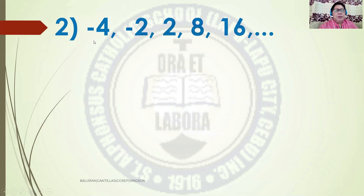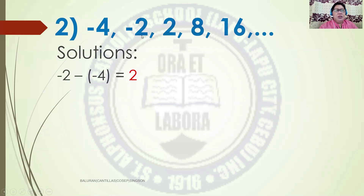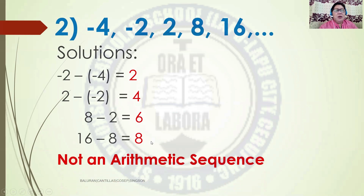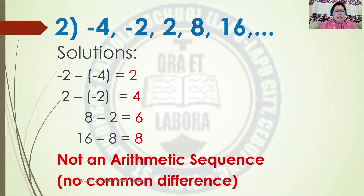Next, number 2. The terms of the sequence are negative 4, negative 2, 2, 8, and 16. Taking the difference: negative 2 minus negative 4 is 2; 2 minus negative 2 is 4; 8 minus 2 is 6; 16 minus 8 is 8. As you can see, there is no Common Difference. That is why we call this Not an Arithmetic Sequence.